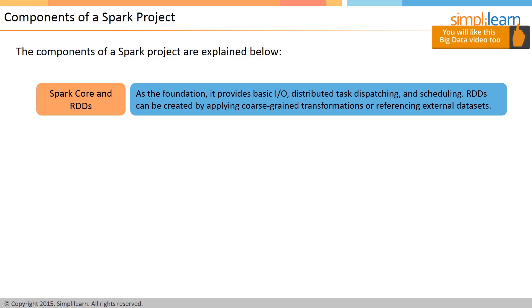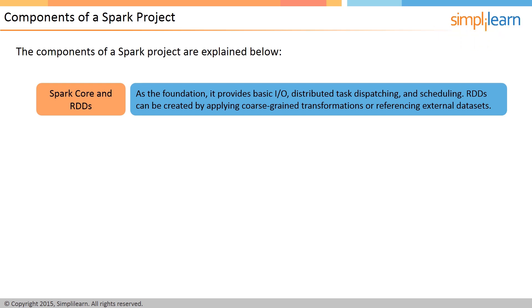RDDs is the basic programming abstraction and is a collection of data that is partitioned across machines logically. These can be created by applying coarse-grained transformations on existing RDDs or by referencing external datasets. Examples of these transformations are Reduce, Join, Filter, and Map. The abstraction of RDDs is exposed similarly as in-process and local collections through a language-integrated API in Python, Java, and Scala. As a result, the complexity of programming is simplified, as the manner in which applications change RDDs is similar to changing local data collections.